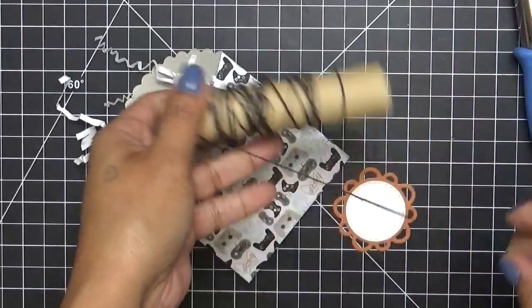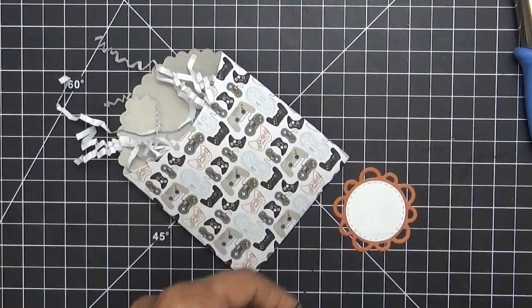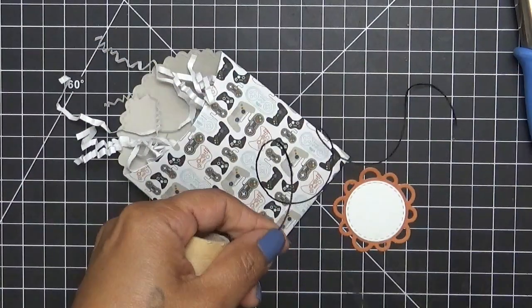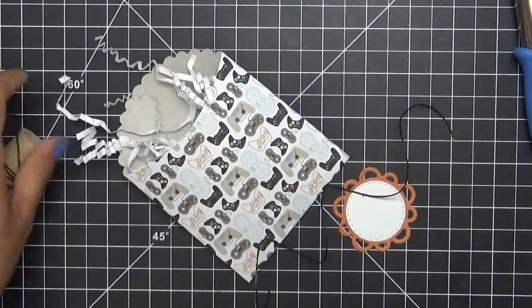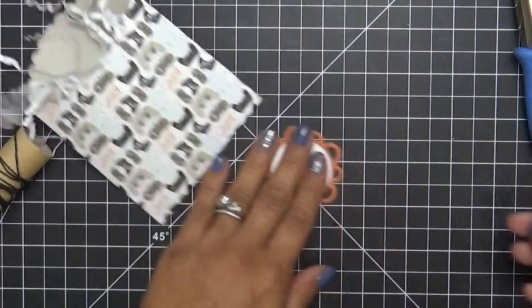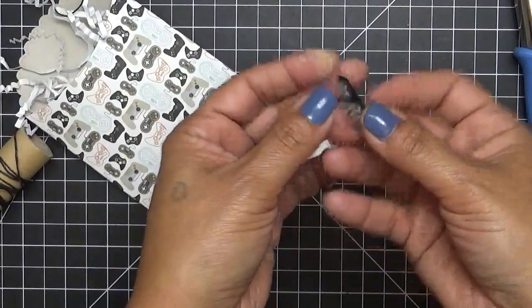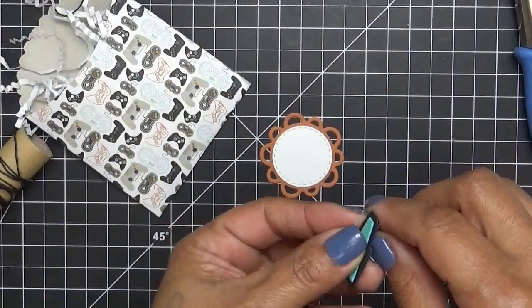All right, here we go. And then we're just going to add this to it. Nothing, you know, just something super simple. But before we put that on, I went ahead and I put some pop up tape on this and we're going to put the initial A on here.